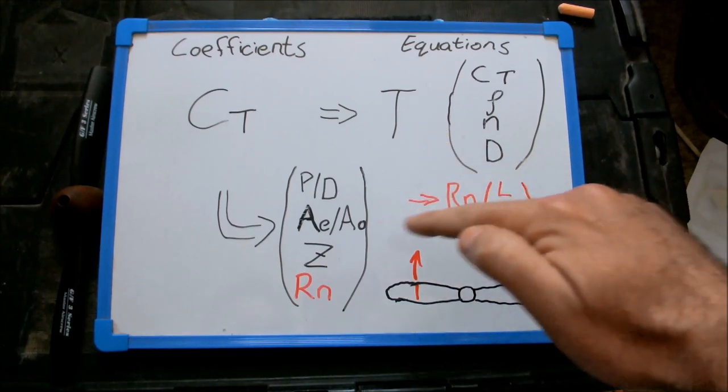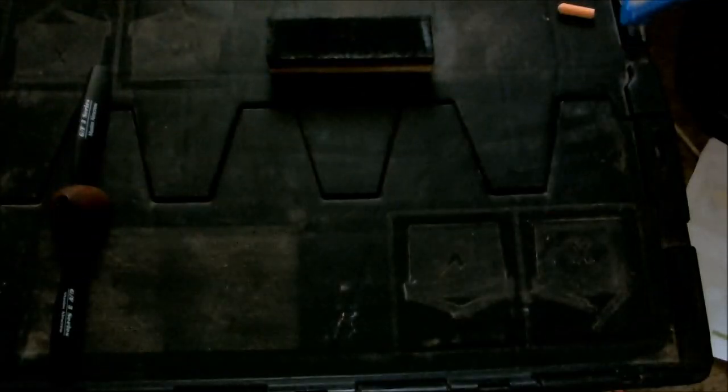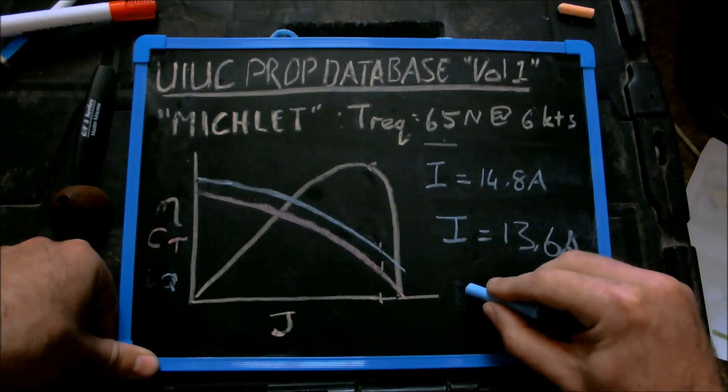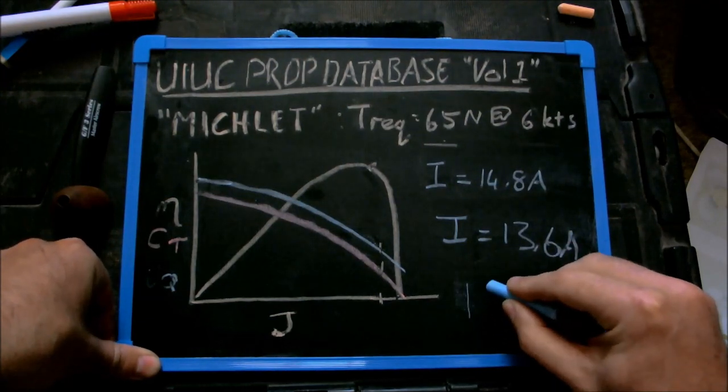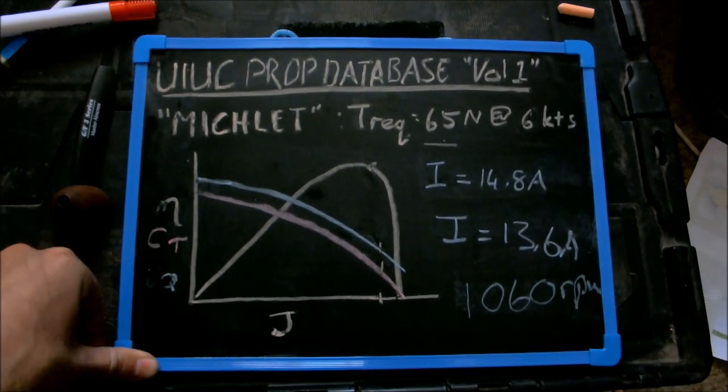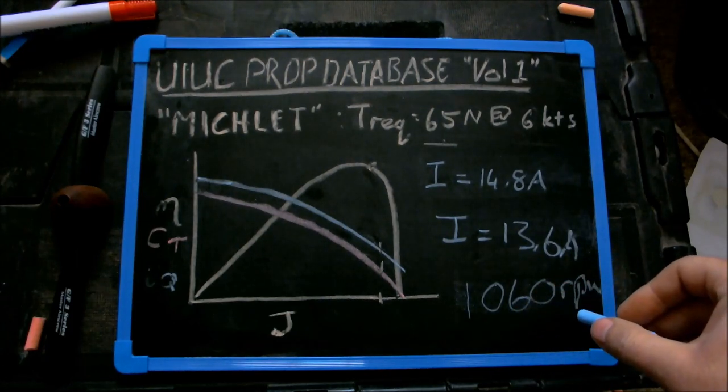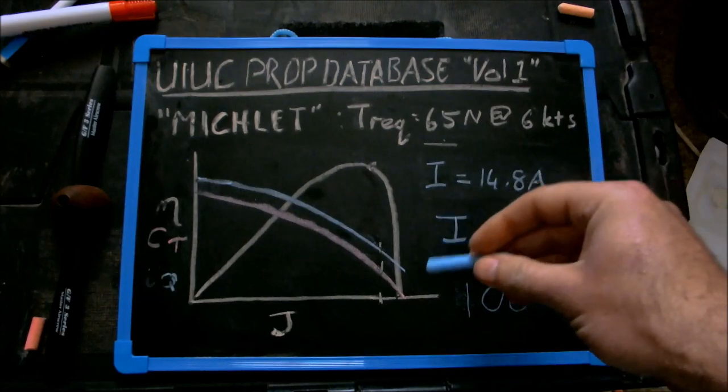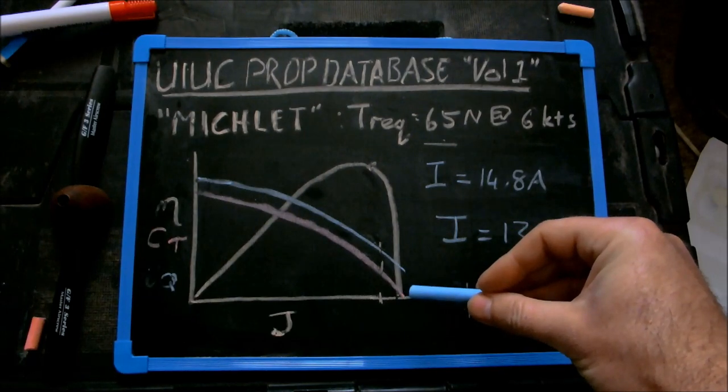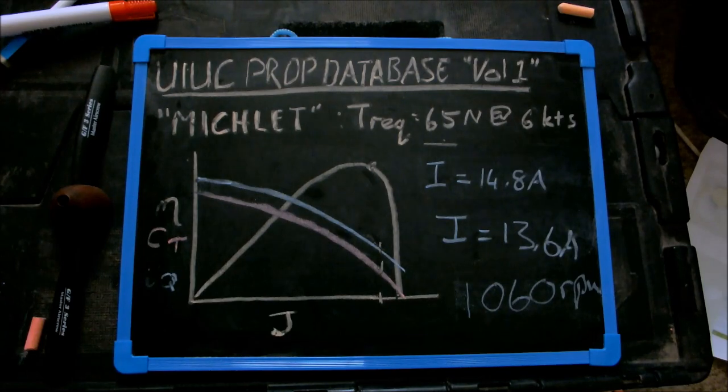But I wasn't running at 400 RPM. From my previous calculations, I was able to calculate that my propeller was turning at 1060 RPM. That means I was actually running at a much higher Reynolds number than the set presented by this curve over here. Now what is the implication of that? Well, let's have a look at the remaining wind tunnel test data.